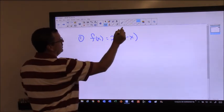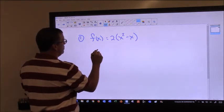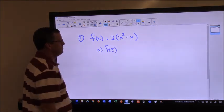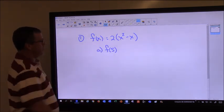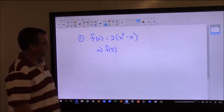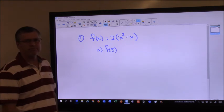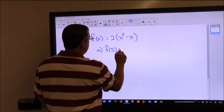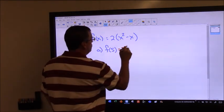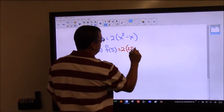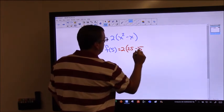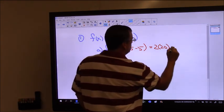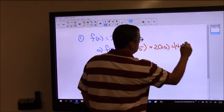So if they gave us a function like this, what they want us to do is they want us to find f of 5. We all know that means you just plug in a 5 and see what you get. So go ahead and take a second, see what you get for that. All right. So if I plug in a 5, I've got 2 times 5 squared. That's 25 minus 5. That'll be 2 times 20, which is 40. There's my answer.